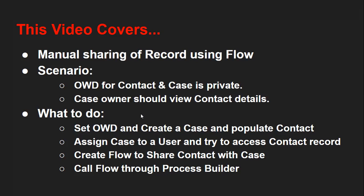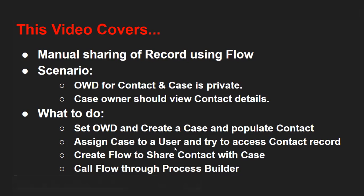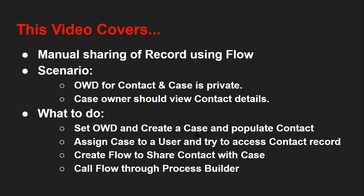We are going to do this with the help of manual sharing using flow. We need to set OWD first, then create a case and populate a contact with the same user. So the owner of both case and contact will be the same user. Then I'll assign the case to another user. At that point, the case will be owned by one user and the contact by another. We need to check whether the new case owner can access the contact record. If not, we'll create a flow to share the contact with the case owner, calling that flow through Process Builder.